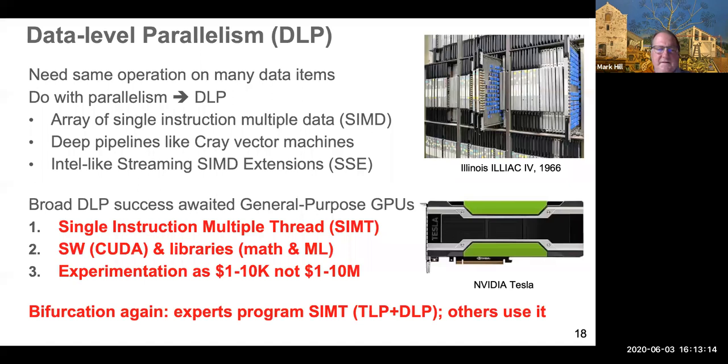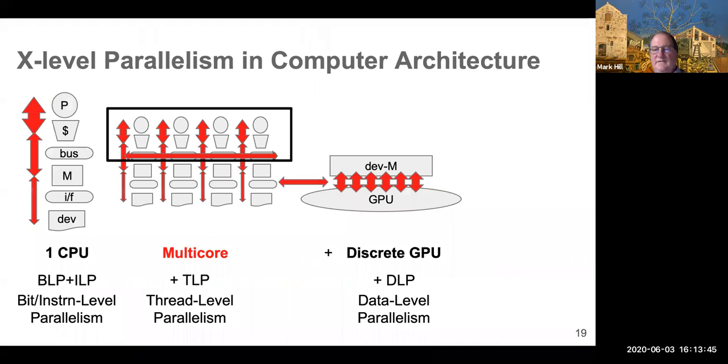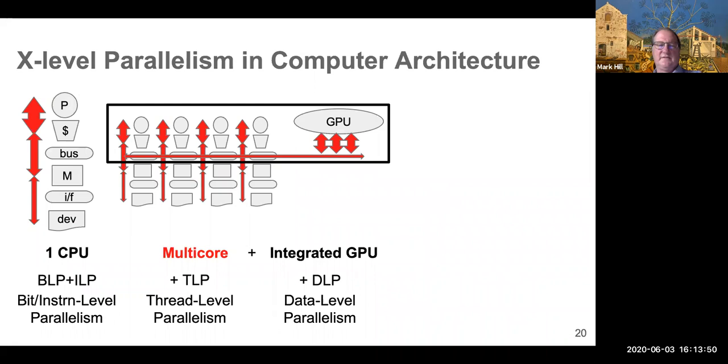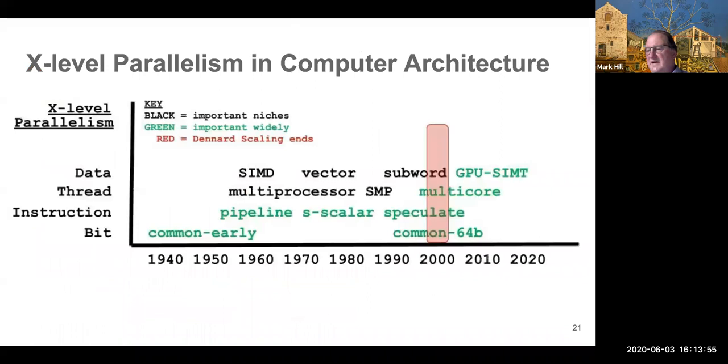And once again, there's a tremendous bifurcation. Only experts program these GPGPUs, but everybody uses it. So, when you go and you ask the internet on your favorite smartphone, I want to see a cat video, you're probably invoking language models and other image learning that's been trained with data-level parallelism. And as follows the usual trends, GPUs were and are discrete, but now there's also a lot of integrated GPUs that get into the black rectangle representing a chip.